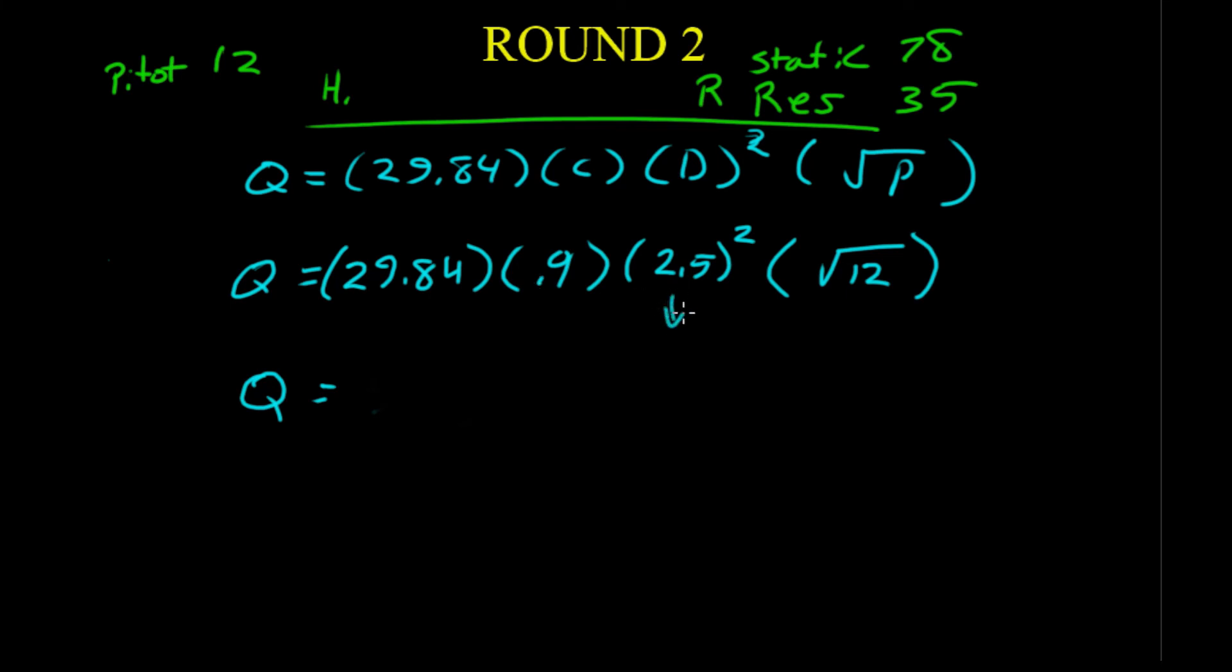So, the 2.5 is going to come down to 6.25. And you can enter it into your calculator like this. And you should get 581.6443. Or you could round it to 582.